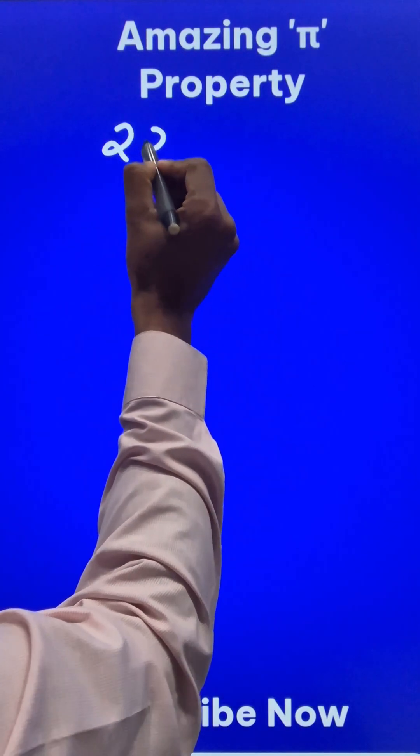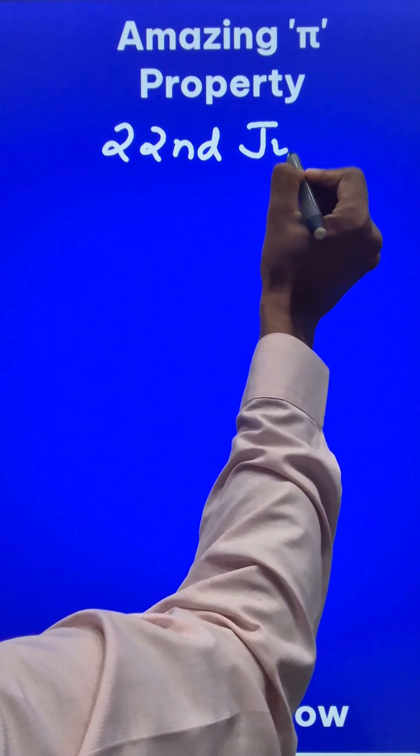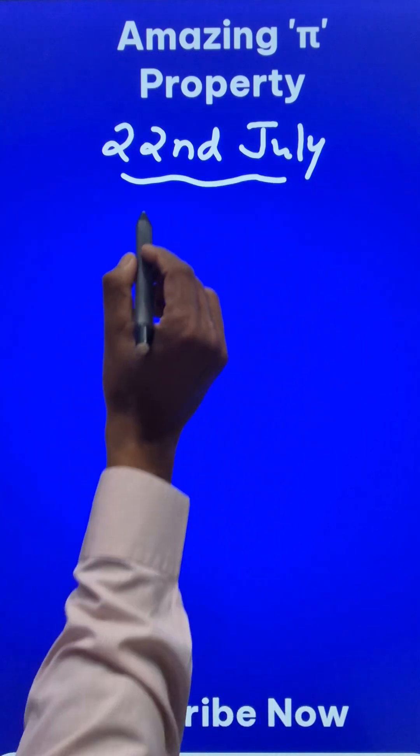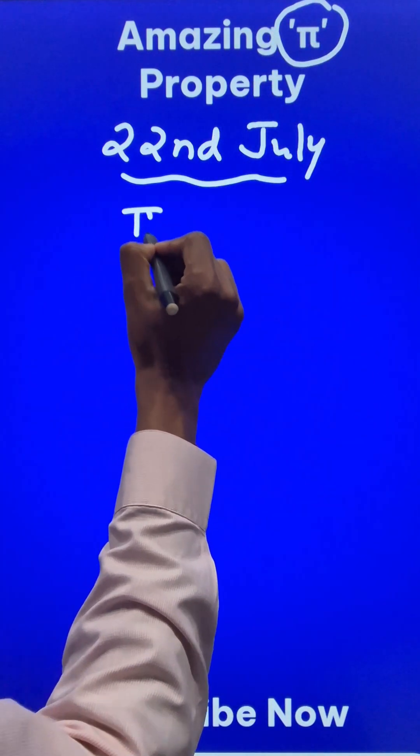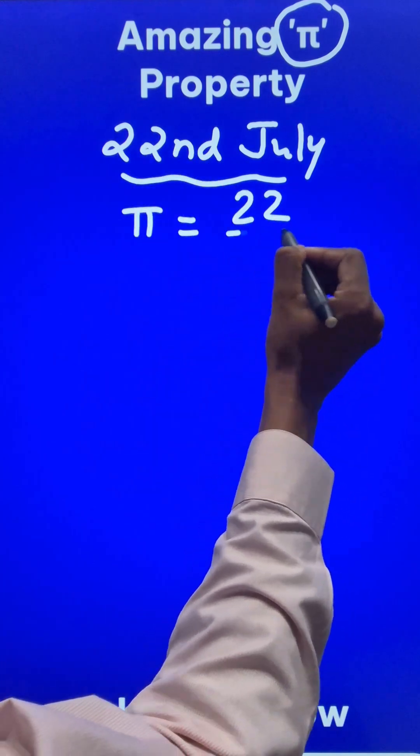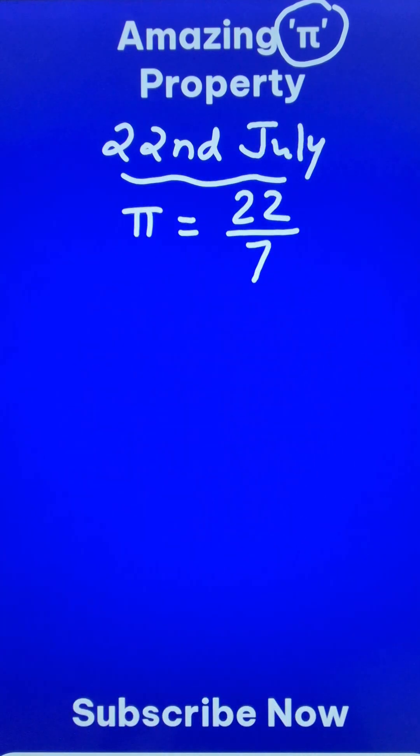Do you know 22nd July? This date is actually celebrated as the pi approximation day. The value of pi, 22 upon 7, denotes the date and upon 7, 7 denotes the month, July.